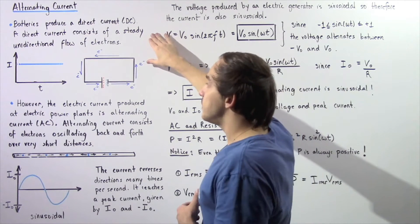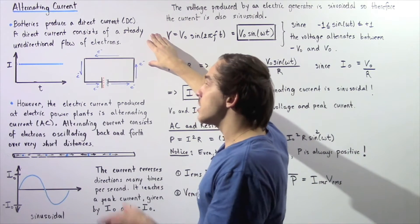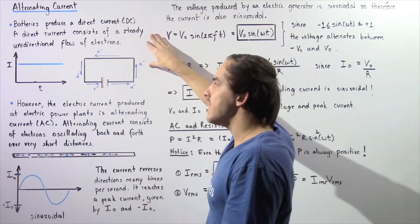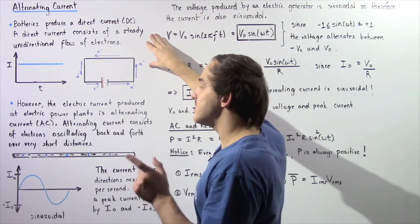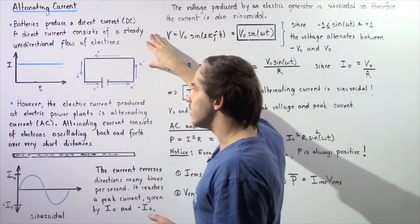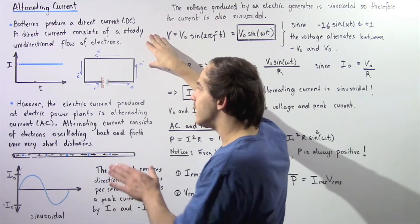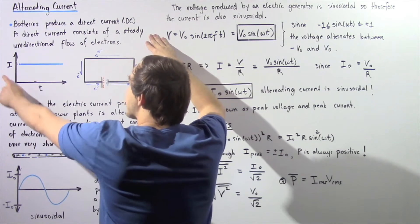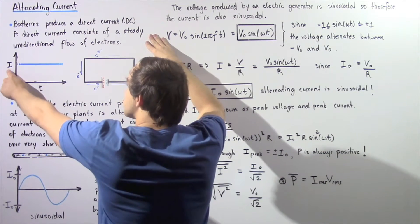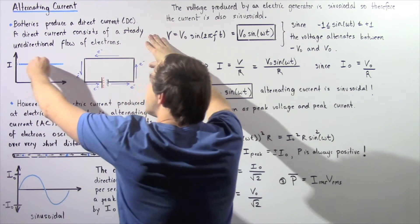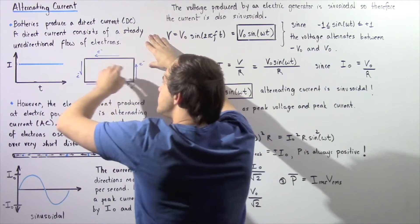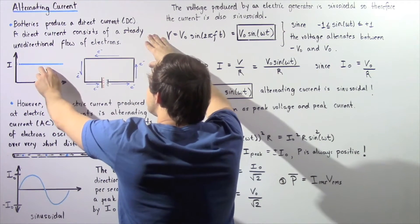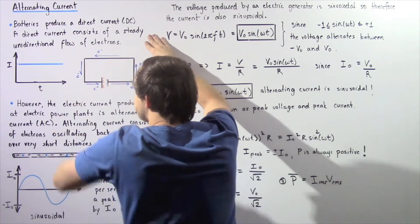Steady simply means the electric current always has the same exact quantity, the same exact value. So if we plot time on the x-axis and electric current on the y-axis, we see a steady, constant value as shown by the constant horizontal line on the graph.